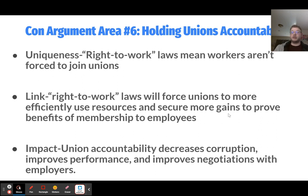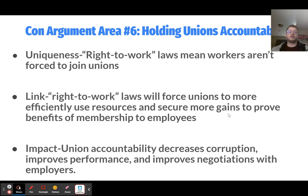The sixth con argument is holding unions accountable. Right-to-work laws mean workers aren't forced to join or pay for labor unions. If union leaders know they can't guarantee membership, they must use resources more efficiently and fairly, and work harder to prove the union's value so more people want to join voluntarily. If membership is guaranteed regardless of performance, there's no motivation to do a good job. The impact is that union accountability decreases corruption, improves performance, and improves negotiations with employers.